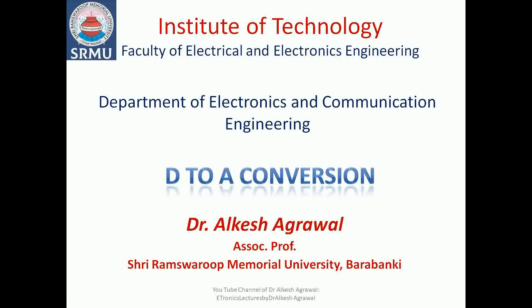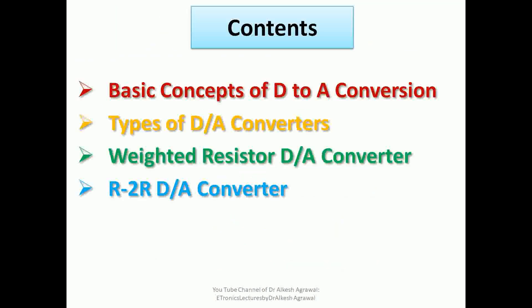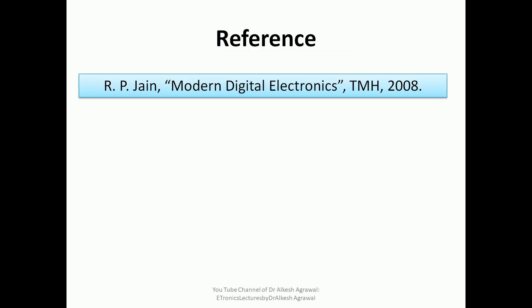Hello students. In this lecture we will discuss D to A conversion, that is digital to analog conversion. In the previous lecture we discussed analog to digital conversion. In this session we will discuss the basic concept of digital to analog conversion, then the different types of converters: the weighted resistor DAC and R2R DAC. The reference book is Modern Digital Electronics by R.P. Jain, publisher Tata McGraw-Hill.